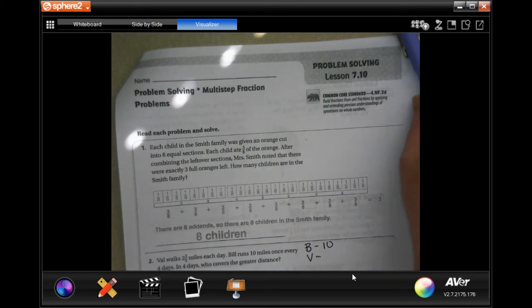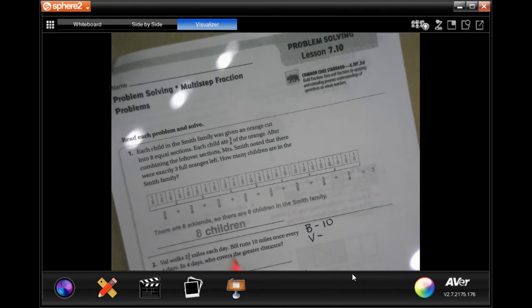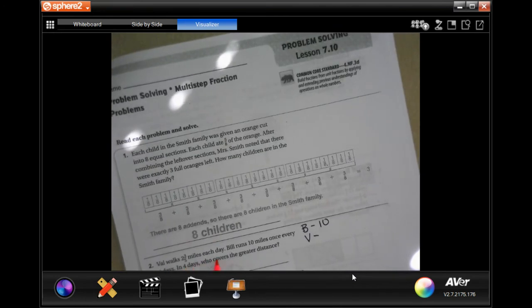Hey y'all, welcome to fourth grade Chapter 7 Lesson 10. We're going to go ahead and get started with number 2. It says that Val walks 2 and 3/5 of a mile each day.